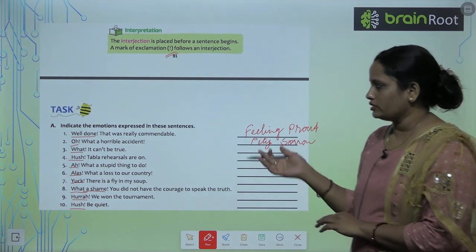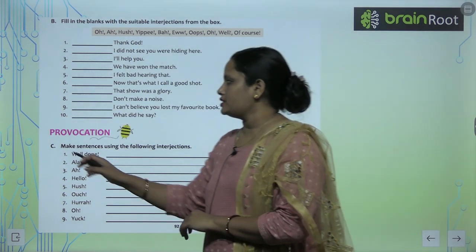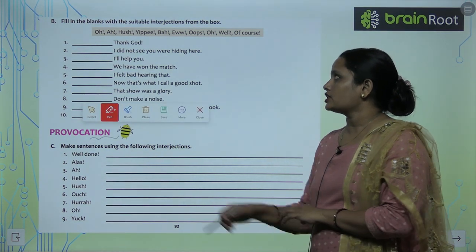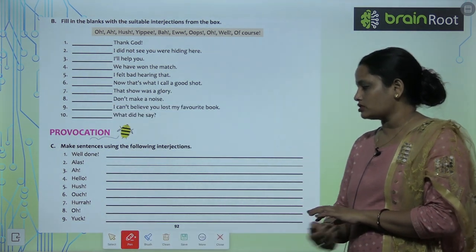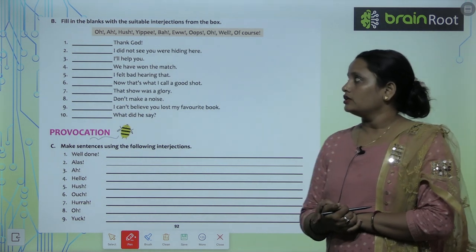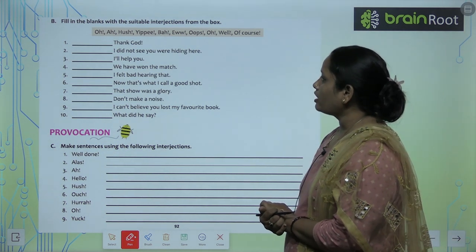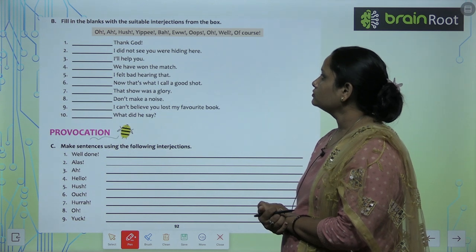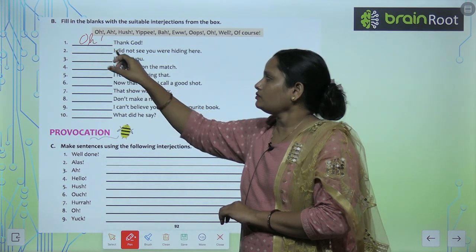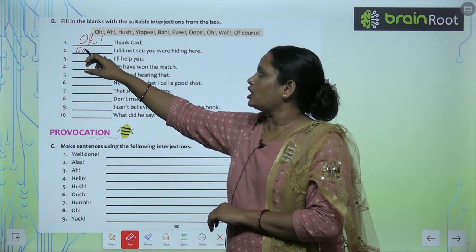The next question, part B, is to fill in the blanks with suitable interjections from the box. For example: 'Oh, Thank God!' and 'Oops, I did not see you — you were hiding here!' Choose which type of interjection fits each blank.